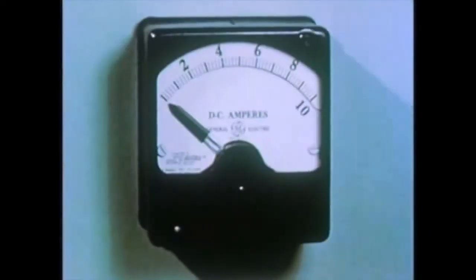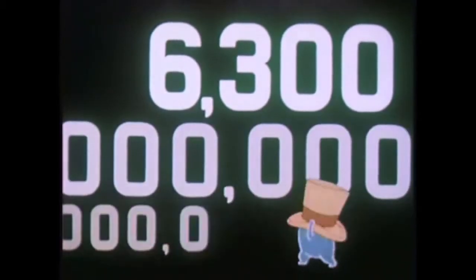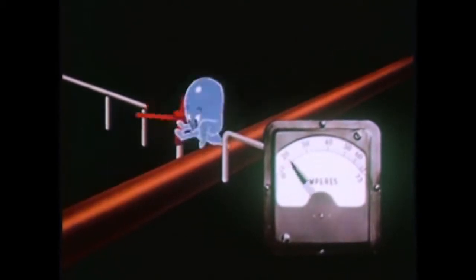The unit of electric current is the ampere. One ampere — now hold on to your hat — is six billion, three hundred million, billion electrons passing any given point in one second. Current or amperage then is the number of electrons that pass a given point in a given time.